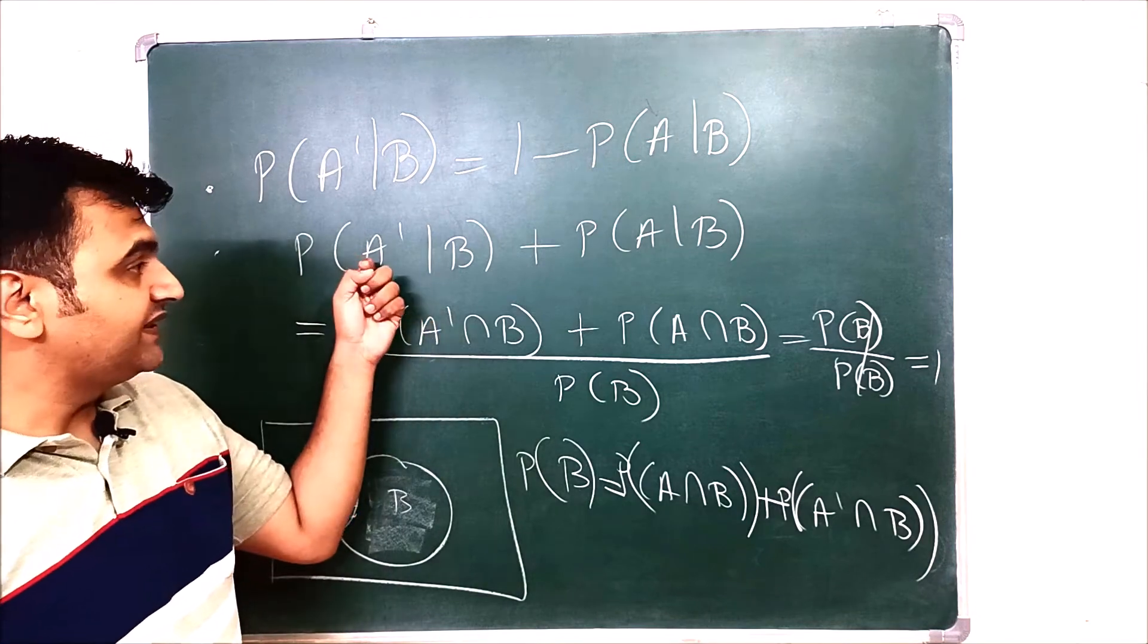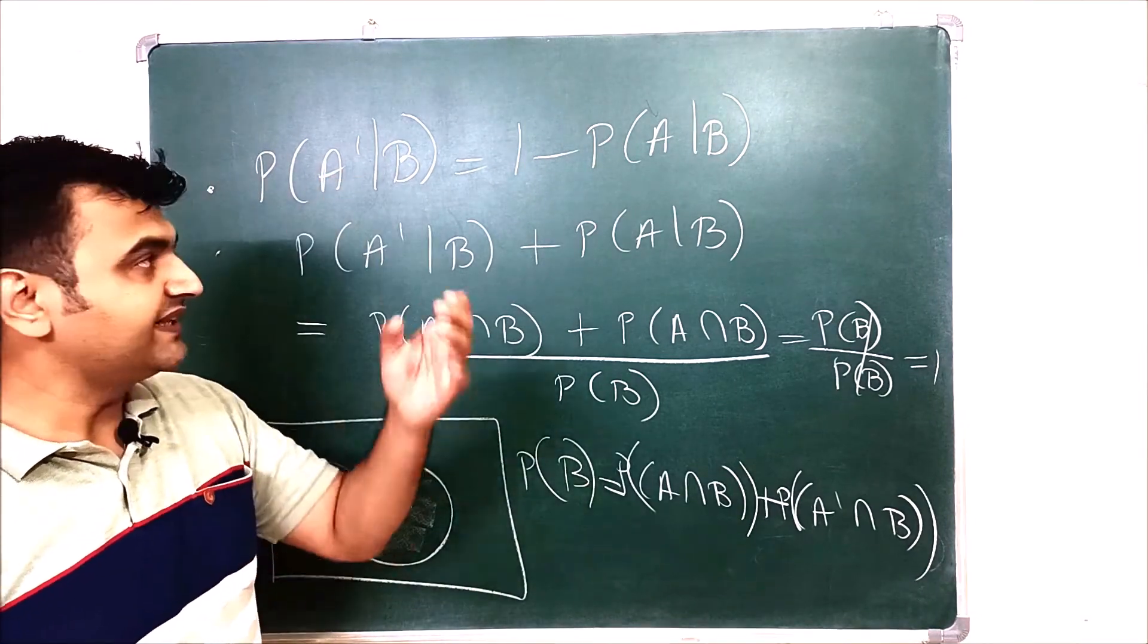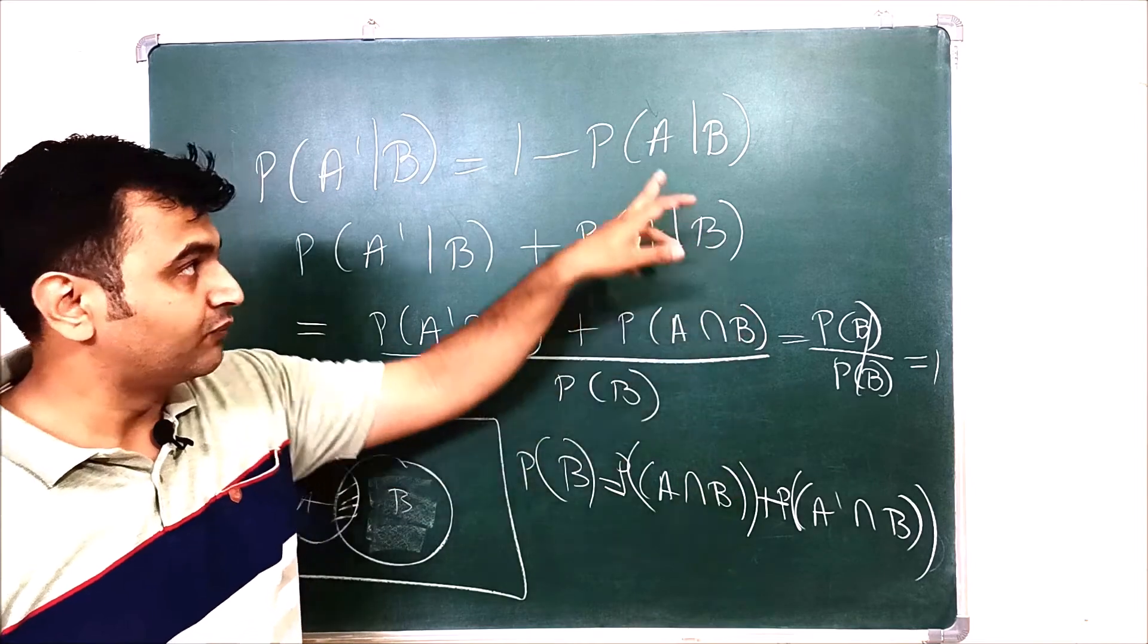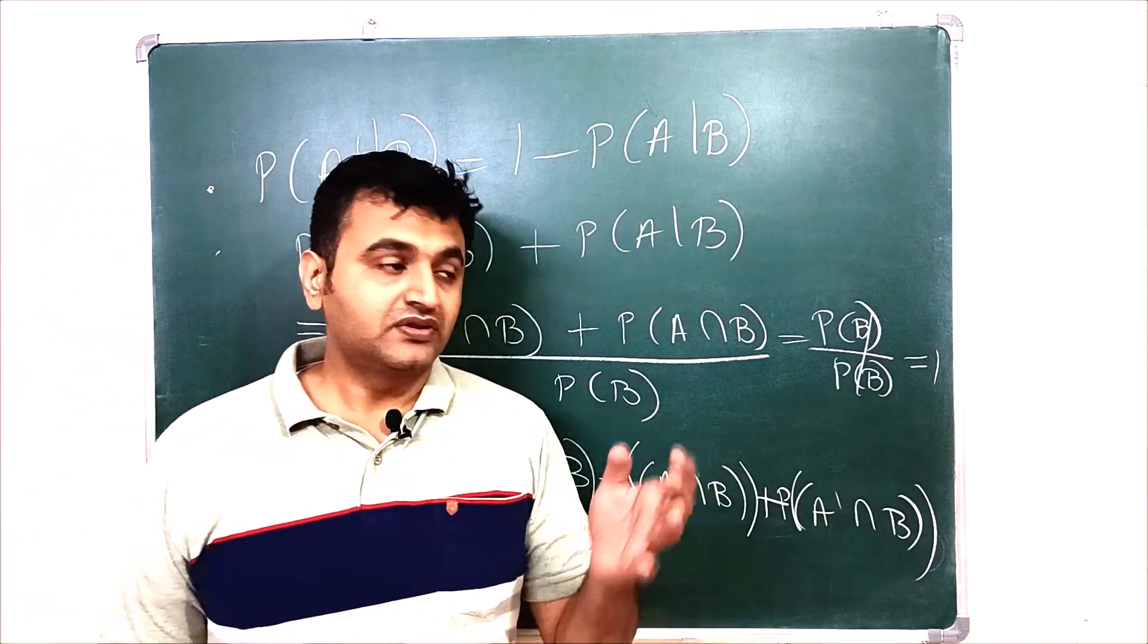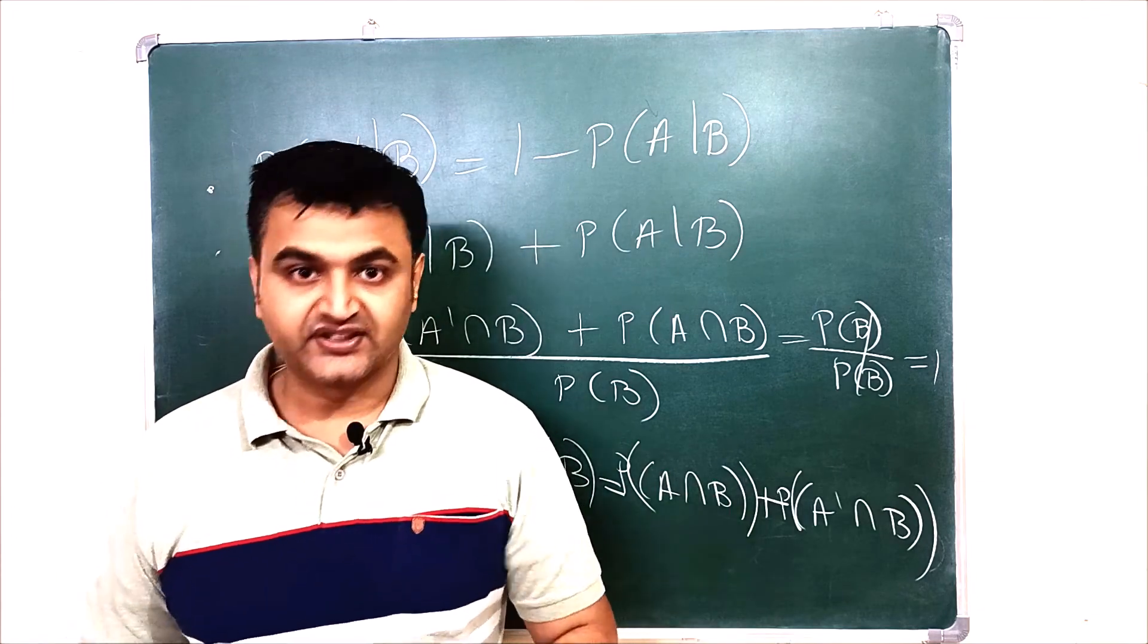So that's why it splits whenever you have a complement in the first component. Split as in you can take one minus the probability of A given B. So yeah, I hope the proof is clear. If you still have a doubt, you can ask me in the comment section. Thank you.